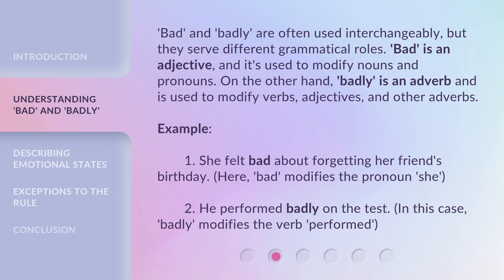For example: one, she felt bad about forgetting her friend's birthday. Here, bad modifies the pronoun she. Two, he performed badly on the test. In this case, badly modifies the verb performed.